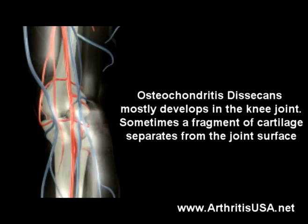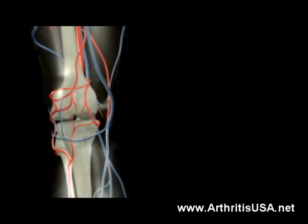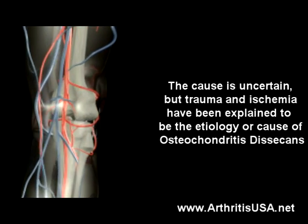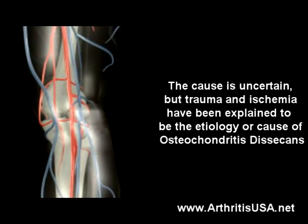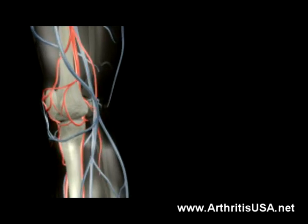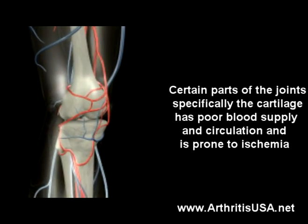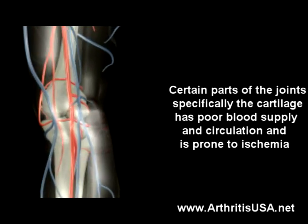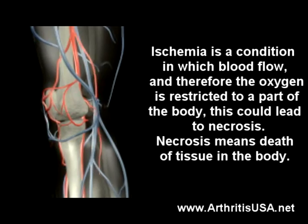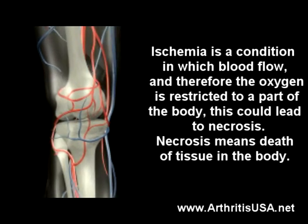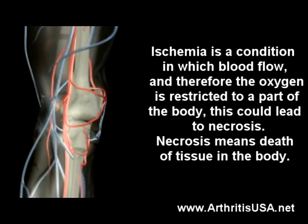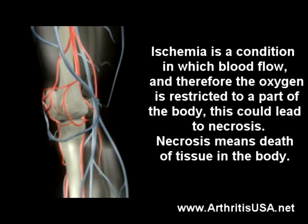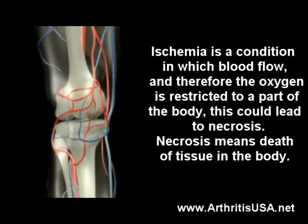Sometimes a fragment of cartilage separates from the joint surface. The cause is uncertain, but trauma and ischemia have been proposed as the etiology of osteochondrosis desiccans. Certain parts of the joints, specifically the cartilage, have a poor blood supply and are prone to ischemia. Ischemia is a condition in which blood flow and therefore oxygen is restricted to a part of the body, which could lead to necrosis — the death of tissue inside the body.